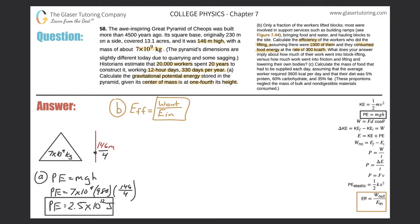This fraction cannot be greater than one — if it is, something's wrong. They told us there were 1,000 workers consuming food energy at 300 kilocalories per hour. That's the energy put in — what they were metabolizing. The energy output is what we calculated in part A: the gravitational potential energy stored in the pyramid, which came from the work output of those laborers. So the numerator is already known: 2.5 times 10 to the 12 joules. Now I need to find the denominator, also in joules.